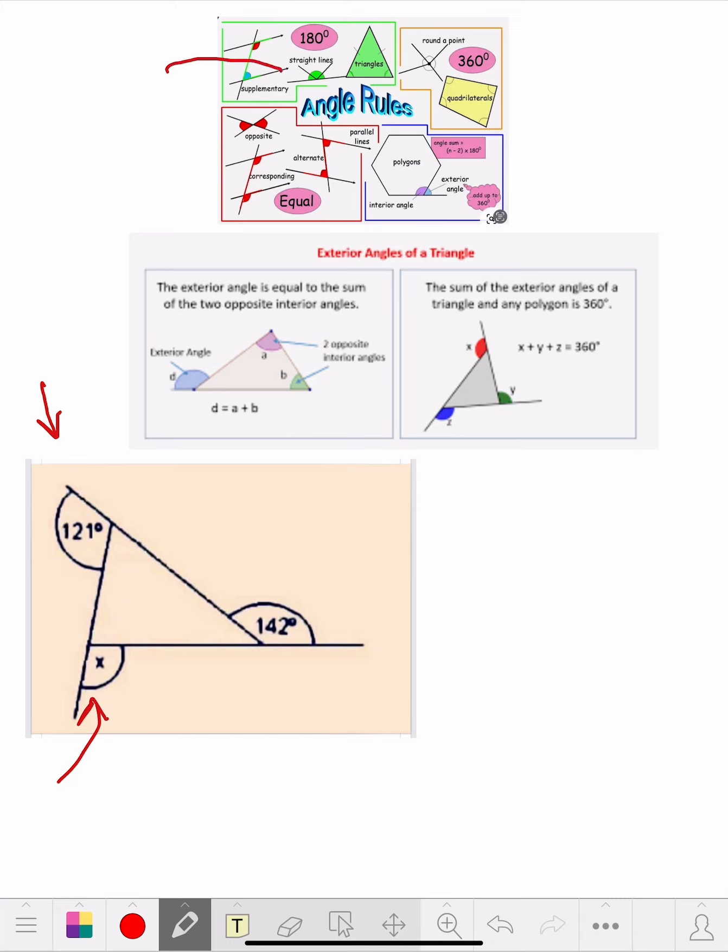So one way is this straight line rule. You know that's 180, right? So let's see, we've got a couple straight lines here. We've got one right here. So we could do 180 minus 121, would come up with 59. That means this angle in here is 59 degrees.